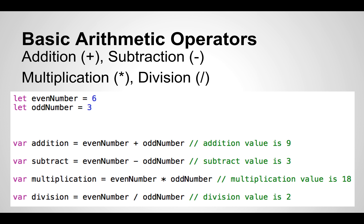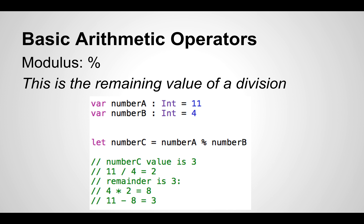Next are the basic arithmetic operations — plus, minus, multiplication, and division. We have evenNumber equal to 6 and oddNumber equal to 3. For addition, evenNumber plus oddNumber gives 9. For subtraction, evenNumber minus oddNumber gives 3. For multiplication, evenNumber times oddNumber gives 18. For division, evenNumber divided by oddNumber gives 2. Those are the basic arithmetic operators.